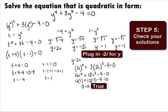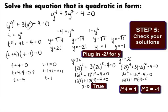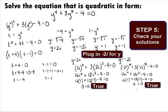Next, let's plug in negative 2i for y into the original equation. We get negative 2i raised to the 4th power plus 3 times negative 2i squared minus 4 equals 0. This simplifies to 16i to the 4th plus 12i squared minus 4 equals 0, then 16 times 1 plus 12 times negative 1 minus 4 equals 0, giving us 0 equals 0. Since this is a true statement, y equals negative 2i is also a solution.